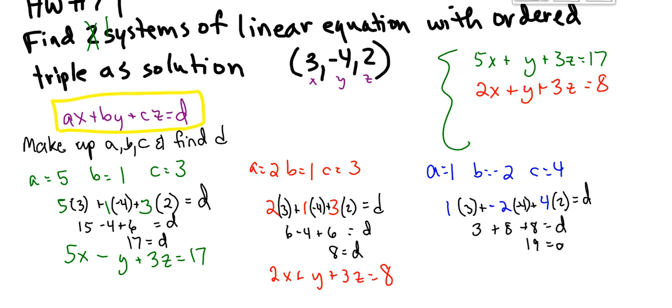And I will try to write it correctly this time. So that's going to be 1x, which is just x minus 2y, plus 4z equals 19. So actually, that is how, as a teacher, I can determine the solution and then make up the system of equations for you to solve.